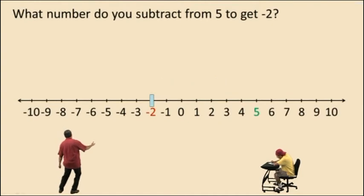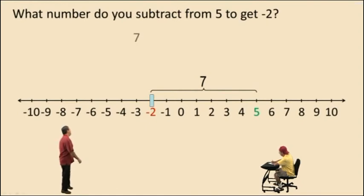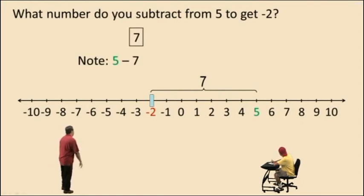So we move a total of 7 units to the left from the 5. So, what number do you subtract from 5 to get negative 2? The answer is 7. That's because 5 subtract 7 is negative 2.